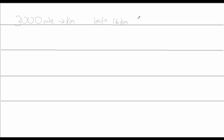1 mile is equal to 1.6 kilometers. I could also write that as 1 mile over 1.6 kilometers, or I could also write this as 1.6 kilometers over 1 mile. Depending on how you set up your problem, you'll use either one — either 1 mile over 1.6, or 1.6 over 1 mile.